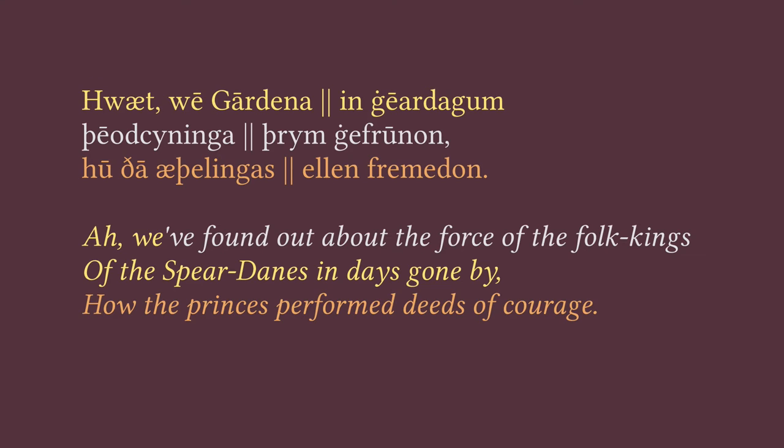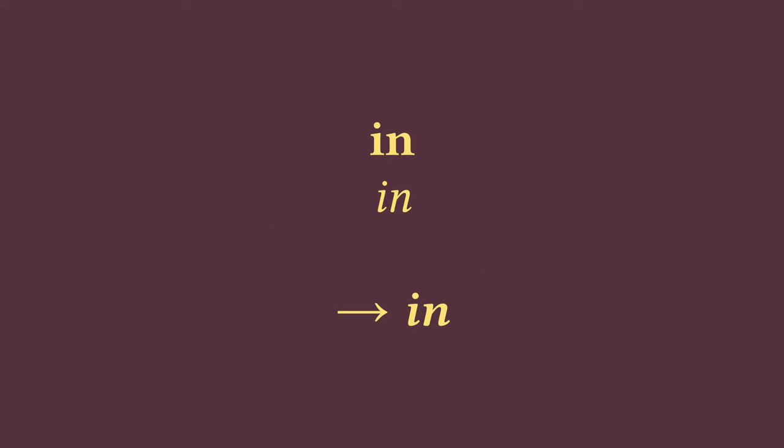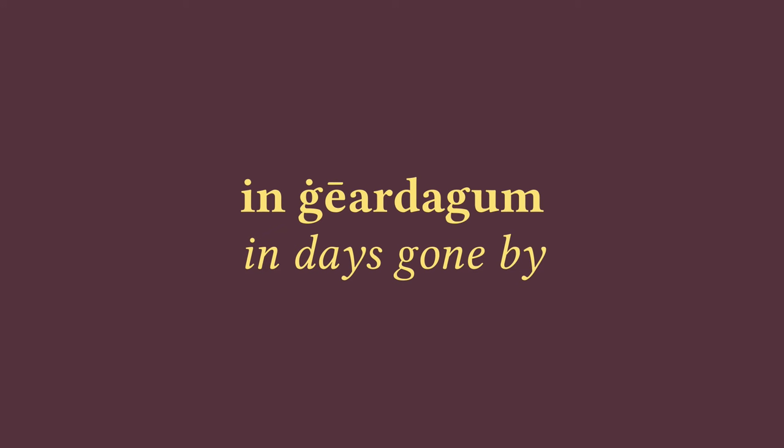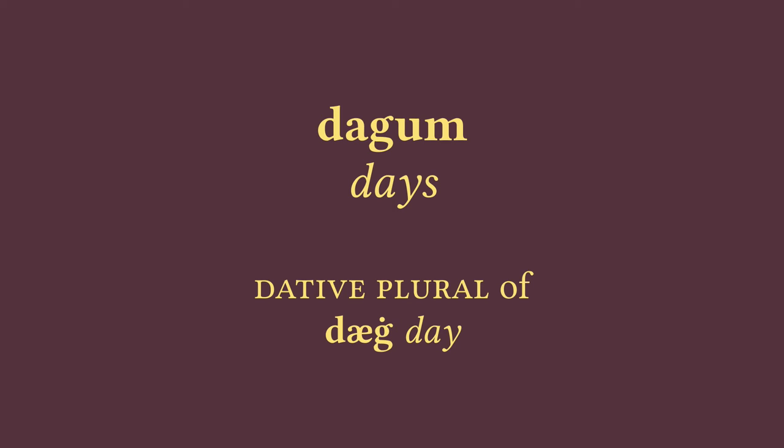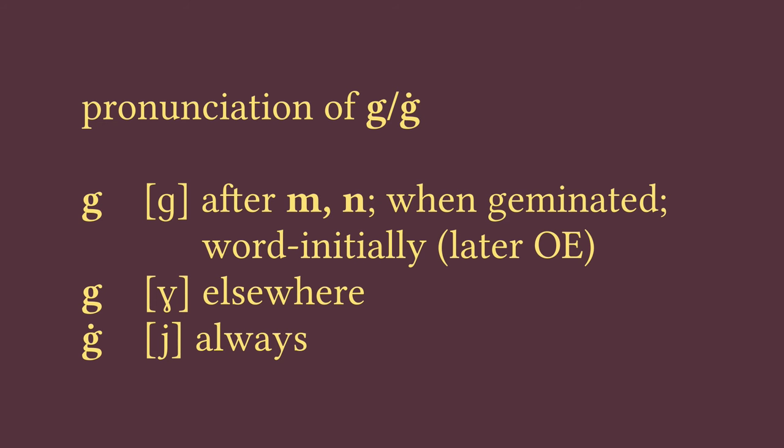Next we have the little phrase 'in ġēardagum.' This is an idiomatic phrase meaning something like 'in days of yore,' 'in olden times,' 'in days gone by.' We can also break it down: first we have 'in,' which is maybe the only word in this passage that both sounds and means roughly the same thing nowadays as it did in the Old English period. Then we have 'ġēardagum,' which is a compound from 'ġēar,' meaning 'year,' and 'dæġ,' meaning 'day.' When the letter G is written with a dot over it, it is pronounced as a Y sound, as in 'young' or 'year' — which is the direct descendant of this word 'ġēar.'